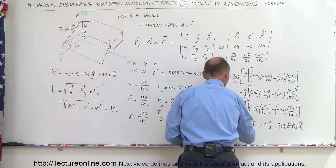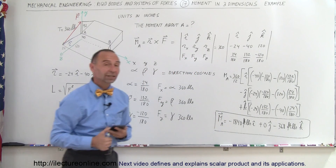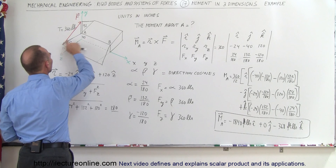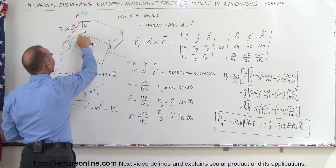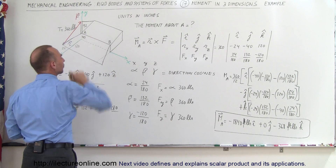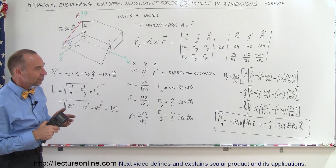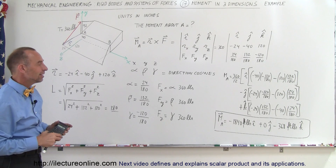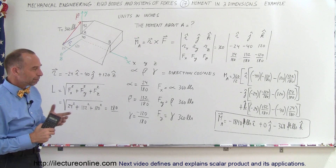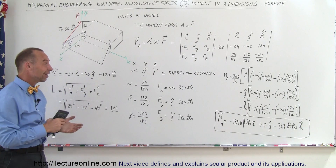The moment is a vector, so we write: M sub A equals minus 1840 I plus 0 J minus 368 K foot-pounds. That is the moment that the force pulling on this corner of the ramp causes relative to pivot point A — minus 1840 foot-pounds in the X direction, zero in the Y direction, and minus 368 foot-pounds in the Z direction. And that's how it's done.